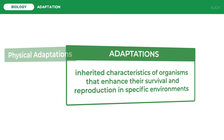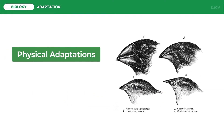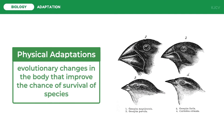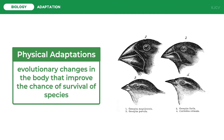Adaptations can be physical adaptations. These are evolutionary changes in the body that improve the chances of survival of species. Physical adaptations lead to adaptive evolution, which increases the frequency of beneficial alleles of a population and decreases the deleterious alleles due to selection.